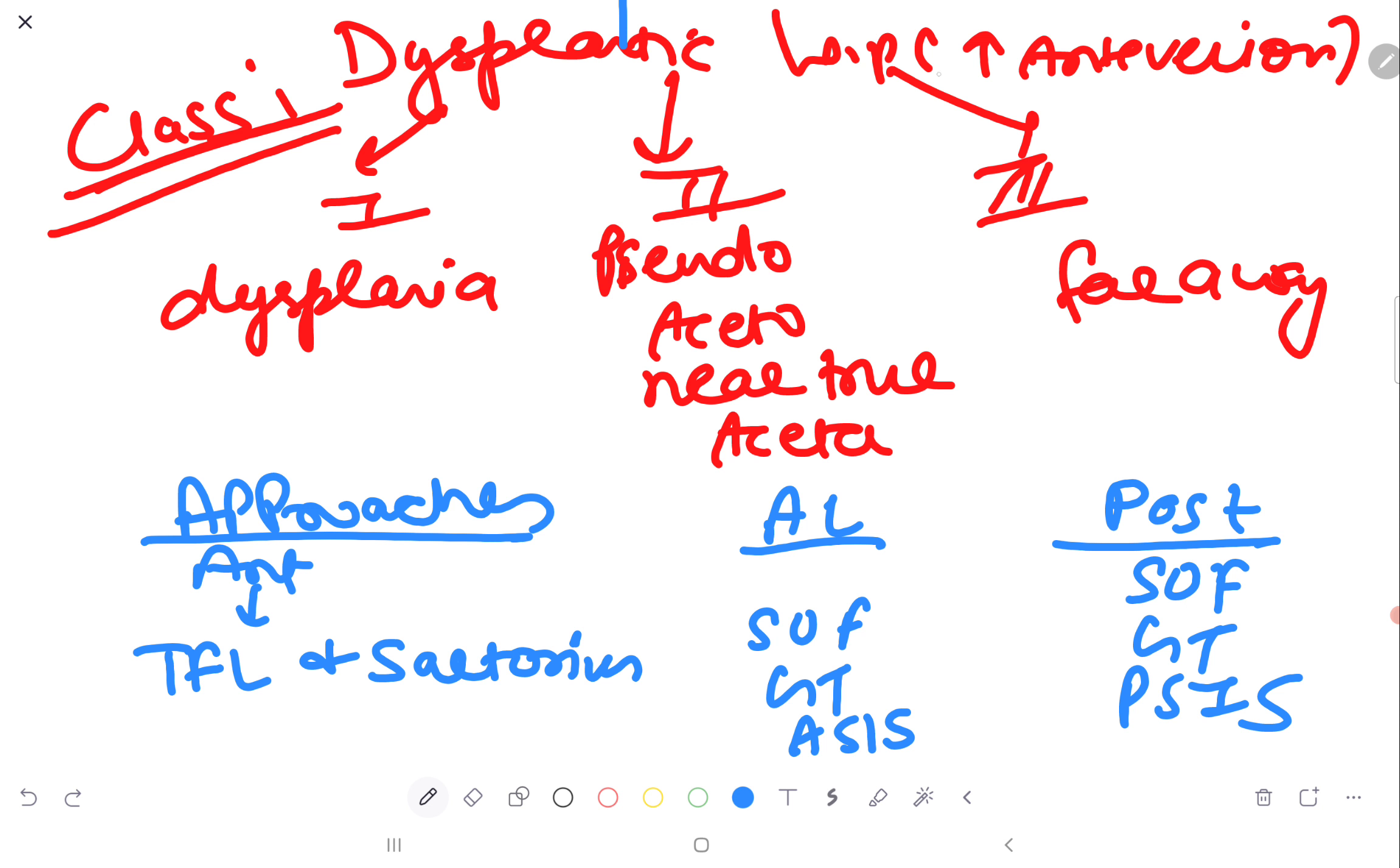In the dysplastic hip, there is already increased anteversion. It has been classified into three types. In the type 1, dysplasia is here. In the type 2, pseudo acetabulum near the true acetabulum. And in the type 3, far away pseudo acetabulum from the true acetabulum. So you can use here graft and then you can keep acetabular cup far away.